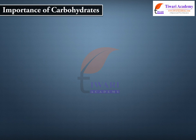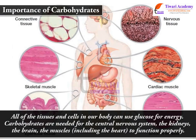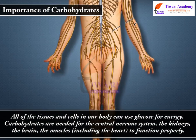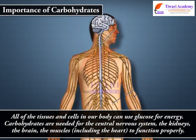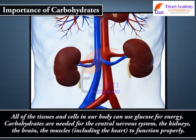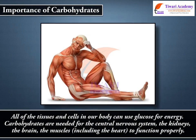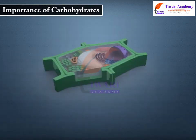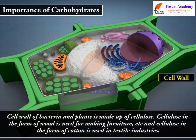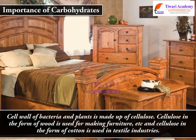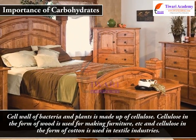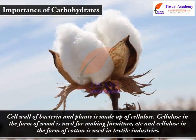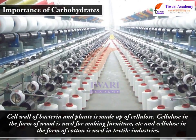All of the tissues and cells in our body can use glucose for energy. Carbohydrates are needed for the central nervous system, the kidneys, the brain, the muscles and cells, including the heart, to function properly. The cell wall of bacteria and plants is made up of cellulose. Cellulose in the form of wood is used for making furniture, and cellulose in the form of cotton is used in textile industries.